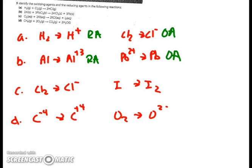Chlorine is being reduced, so it's an oxidizing agent, while iodine is being oxidized, making it a reducing agent. Carbon goes from minus 4 to plus 4, losing electrons — it's being oxidized and is a reducing agent — whereas oxygen is gaining electrons or being reduced, so it is the oxidizing agent.